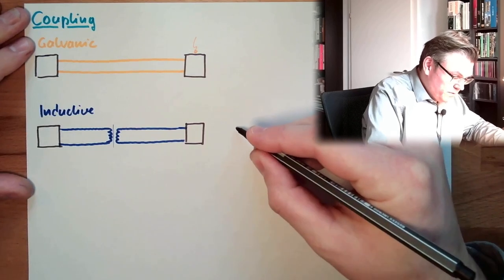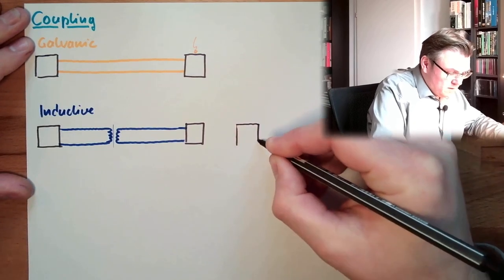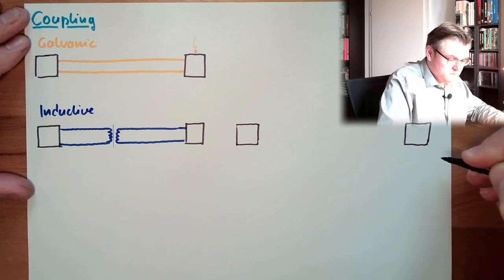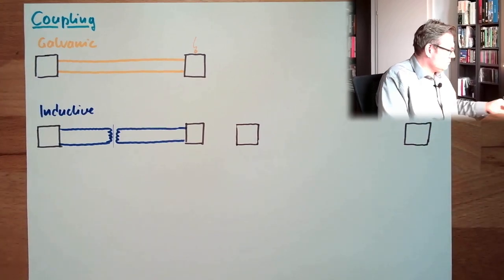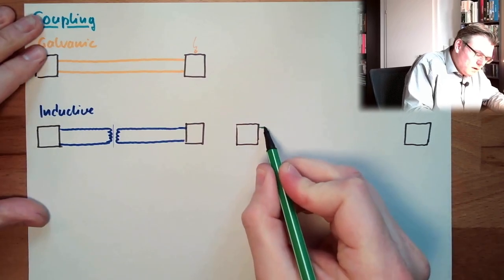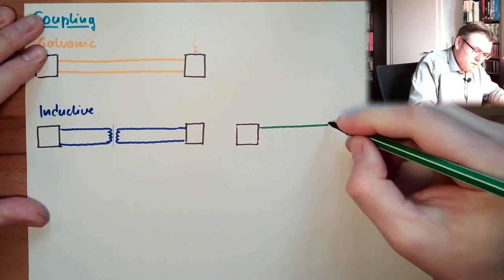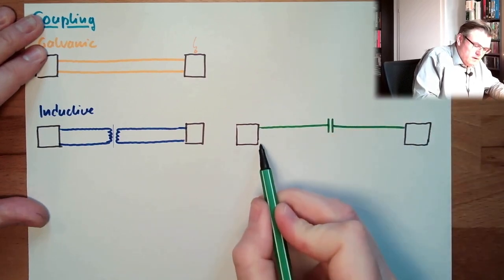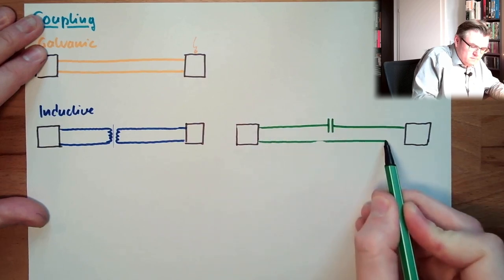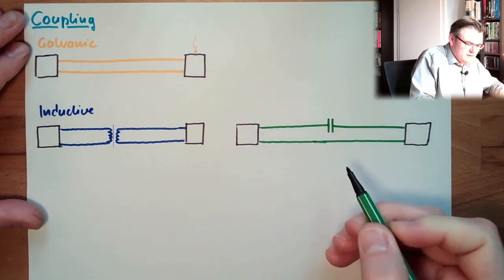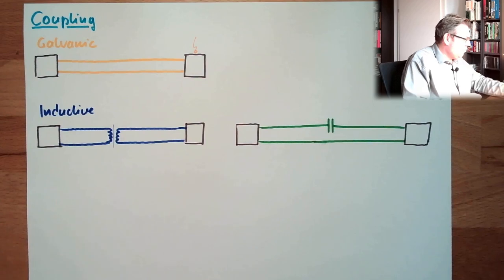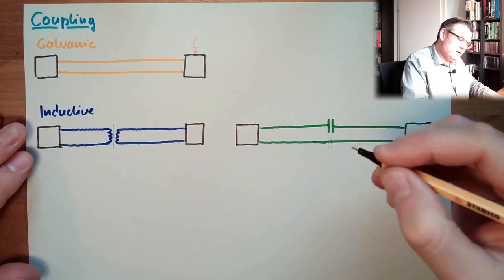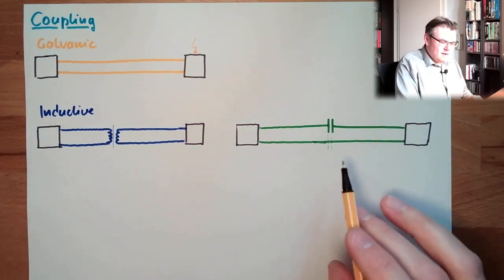Very close related to inductive coupling is the following. I'm using a capacitor. Usually, this line is still coupled. There might also be a capacitor inside. Then we are totally decoupled.